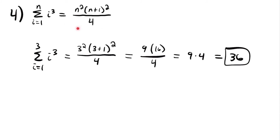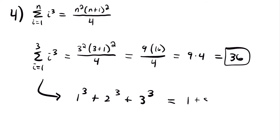Just to verify the formula works, doing it individually: 1 cubed plus 2 cubed plus 3 cubed — we start at 1 and go to 3, cubing each term. That equals 1 plus 8 plus 27, since 2 cubed is 8 and 3 cubed is 27. So 1 plus 8 is 9, plus 27 equals 36. Once again we found the same answer using this summation formula.